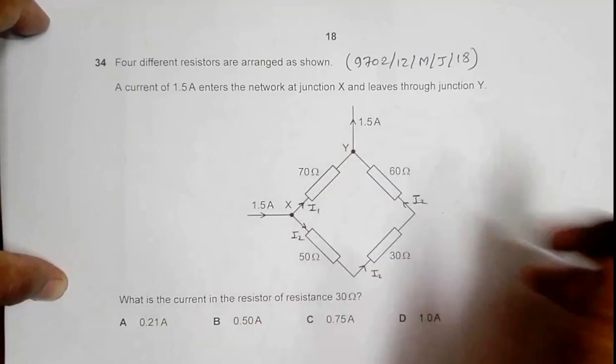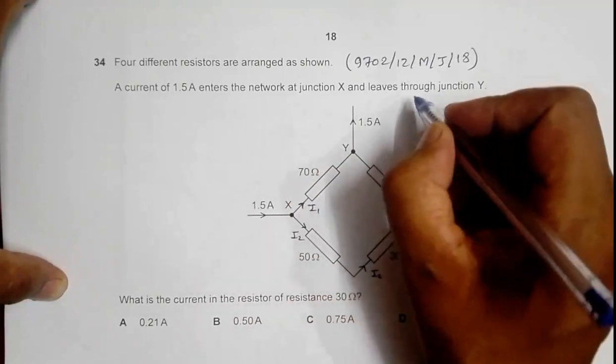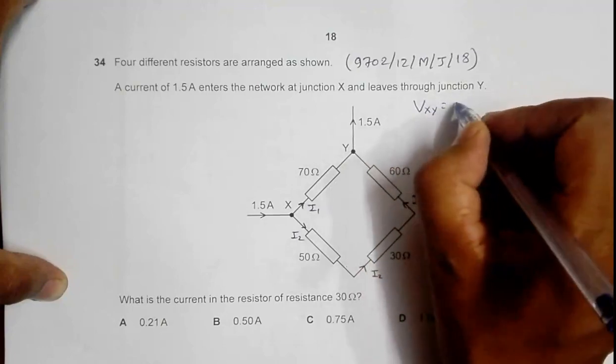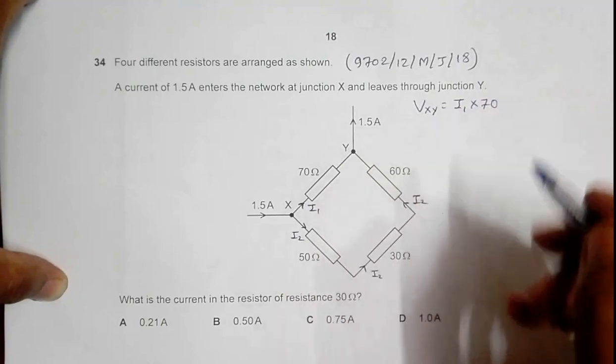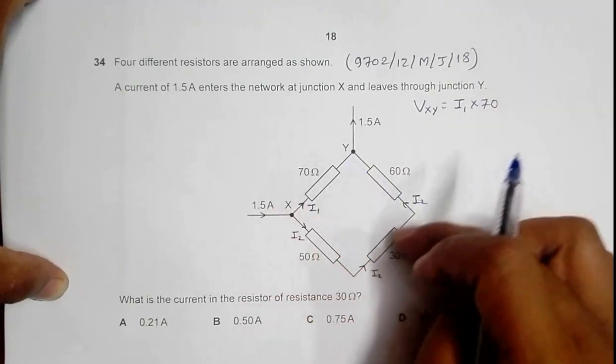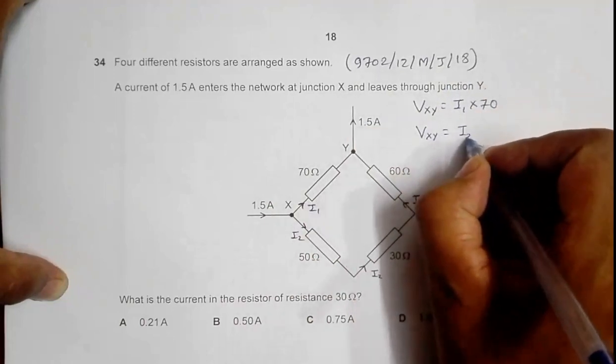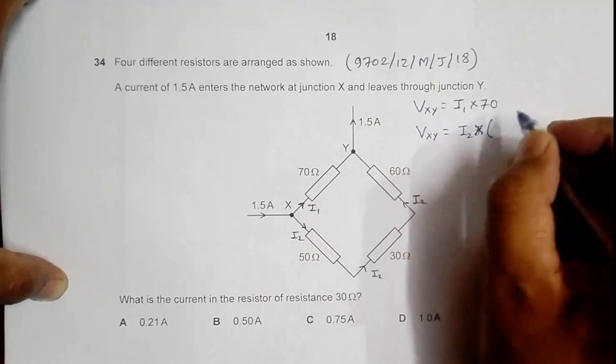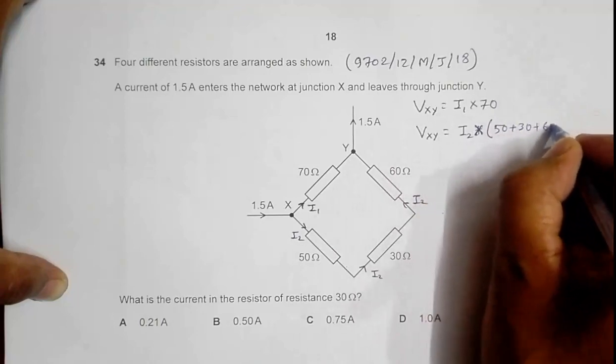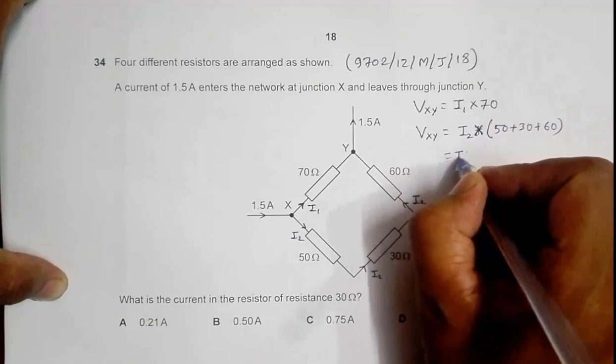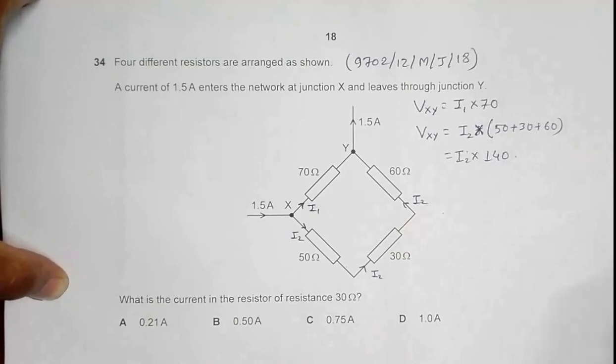If I consider the potential difference Vxy through this branch, I have Vxy equals I1 into 70. If I consider Vxy across this arrangement, I have Vxy equals I2 into the three resistors here, so it is 50 plus 30 plus 60, which equals I2 into 140.